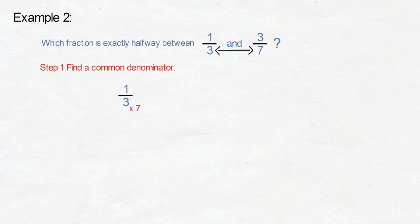For 1 third, we times the denominator and the numerator by 7 to get 7 over 21. For 3 sevenths, we multiply the denominator and the numerator by 3 to get 9 over 21. Step 2: Find the number between.